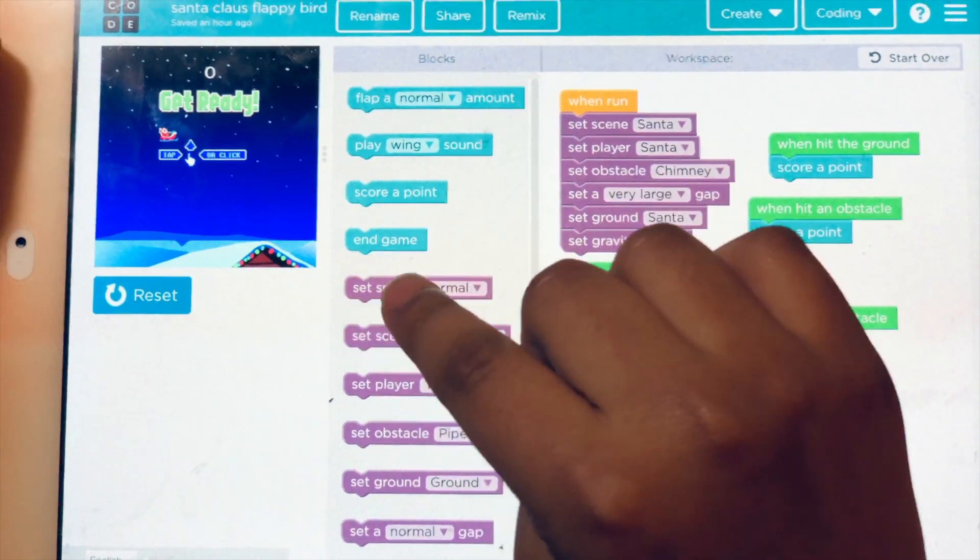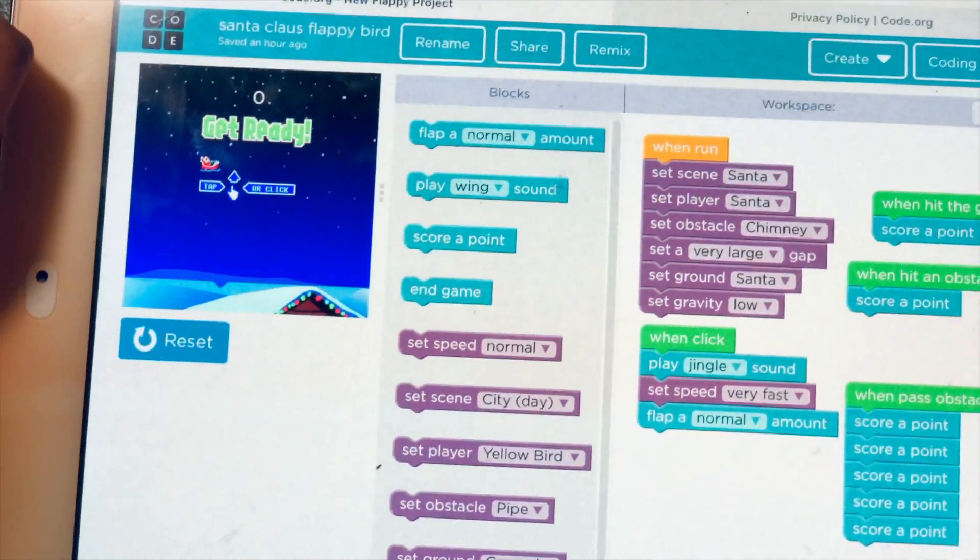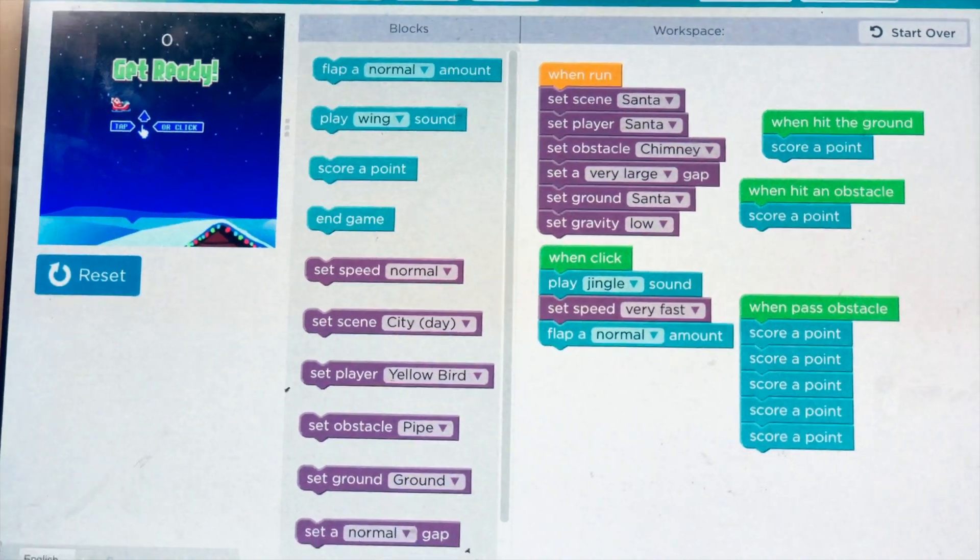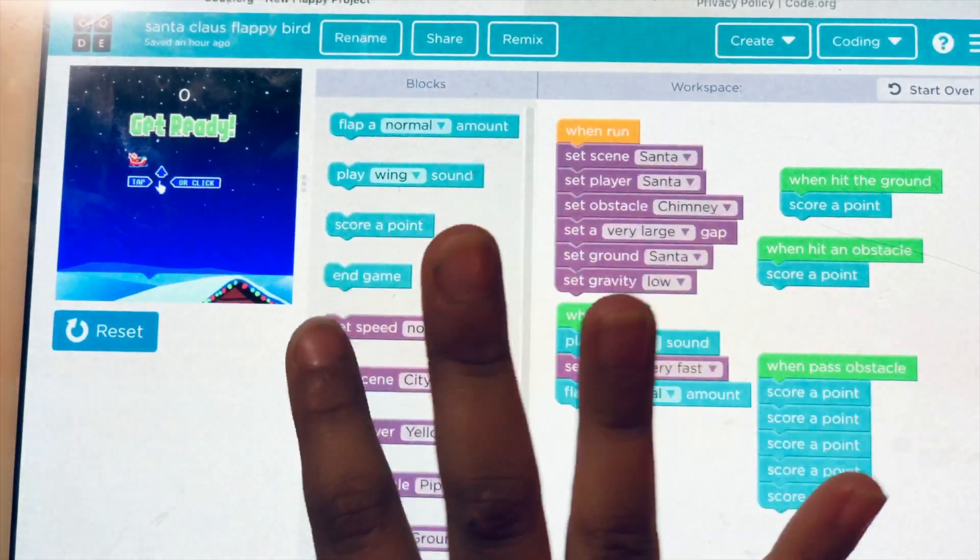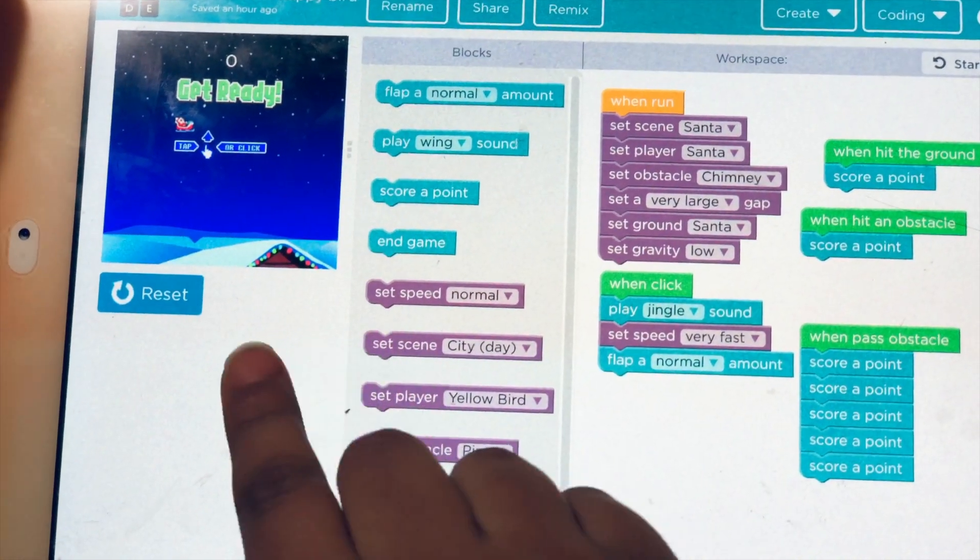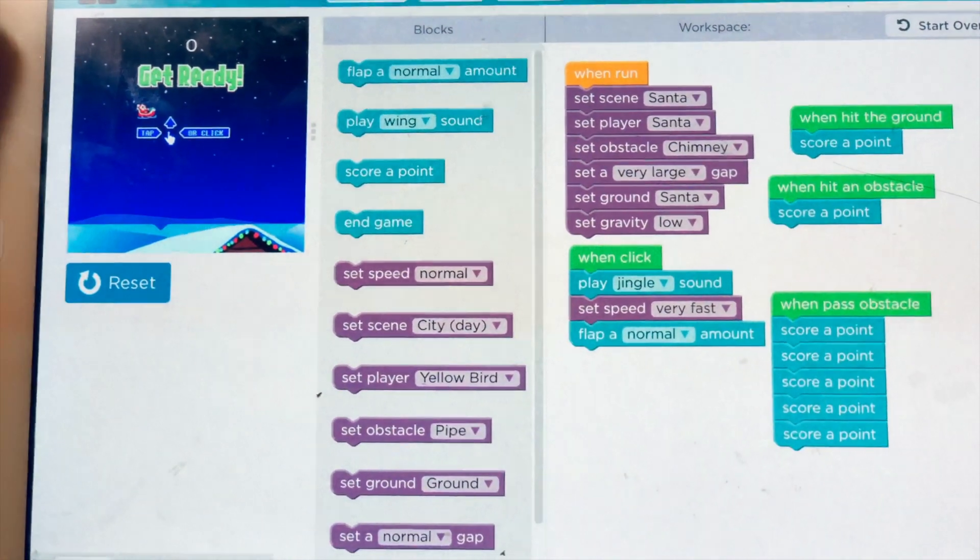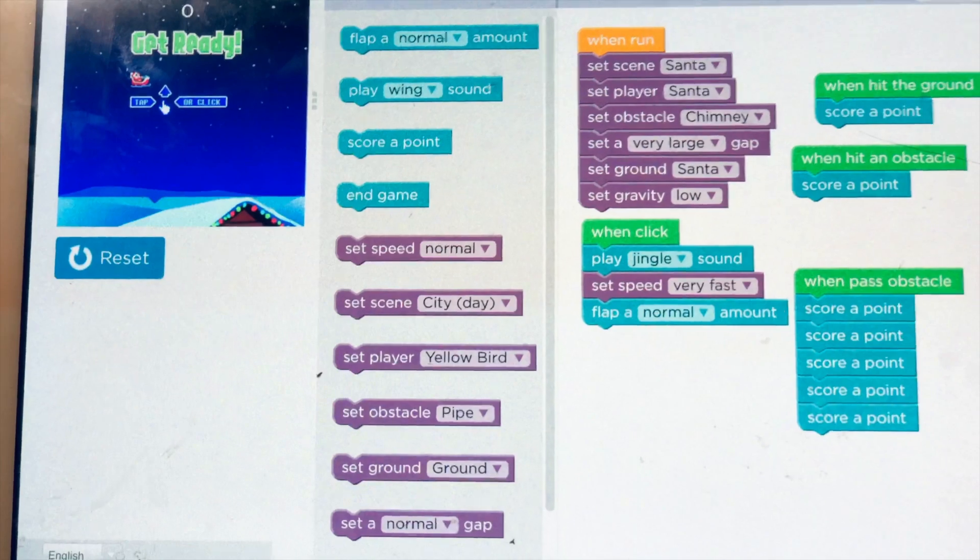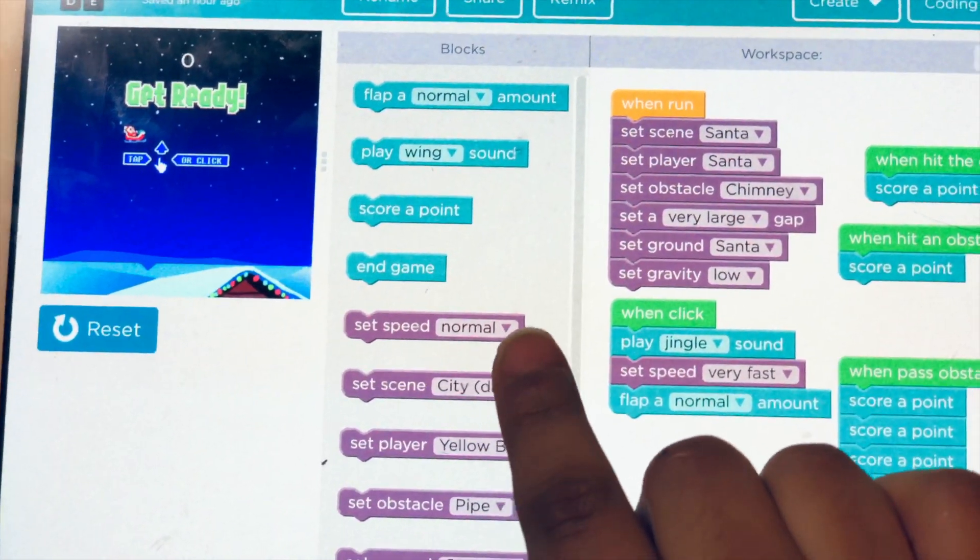Scoring a point is something you can place anywhere you want. This is to end the game. You can set its speed to fast, very fast, slow, very slow, random, and normal.